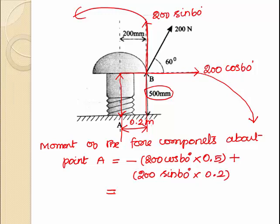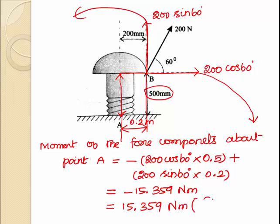The moment of the considered force components about point A is minus 15.359 Newton meter. Since the net moment is negative, the net moment of the considered force components about point A is acting in the clockwise direction. That's all about the moment.